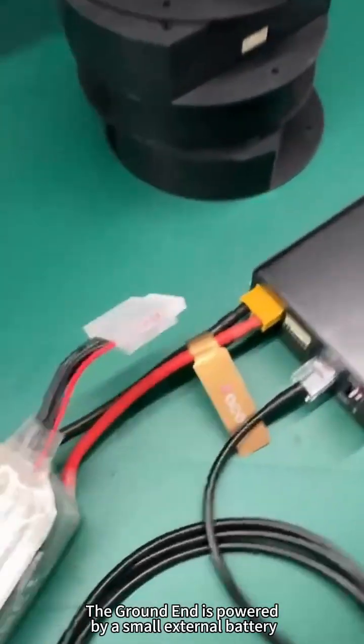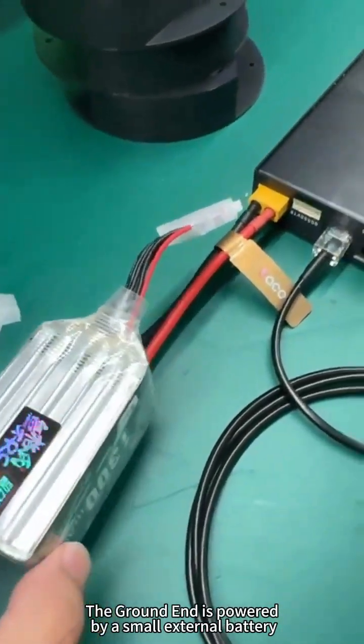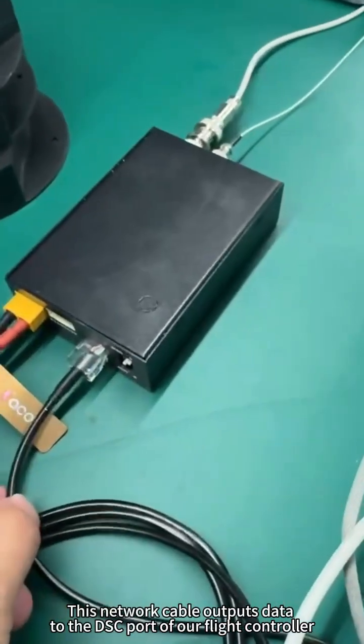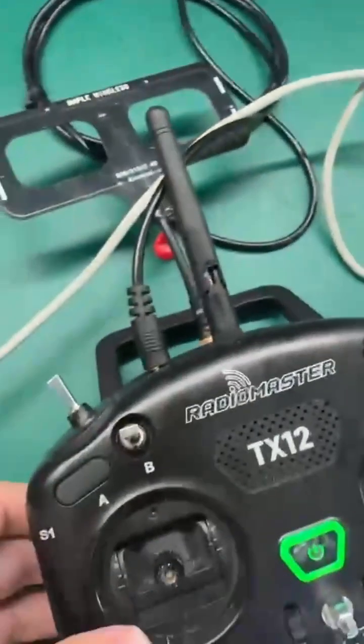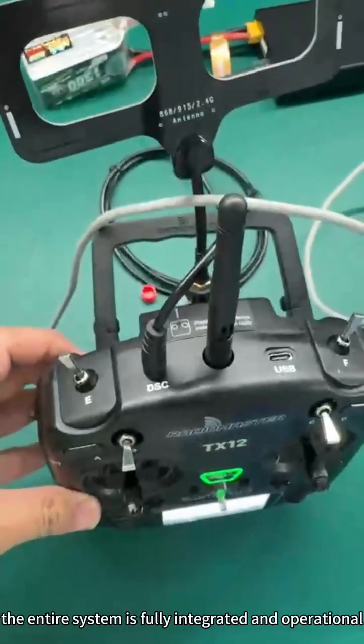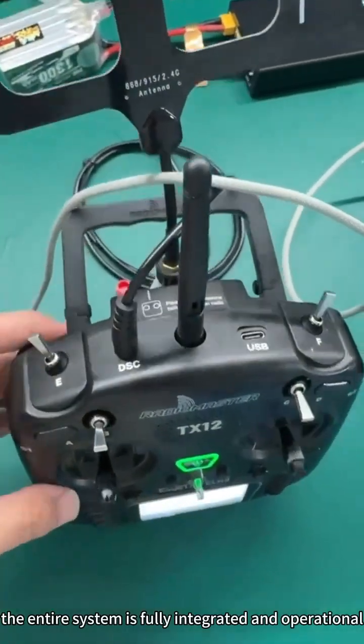The ground end is powered by a small external battery. This network cable outputs data to the DSC port of our flight controller. Finally, the entire system is fully integrated and operational.